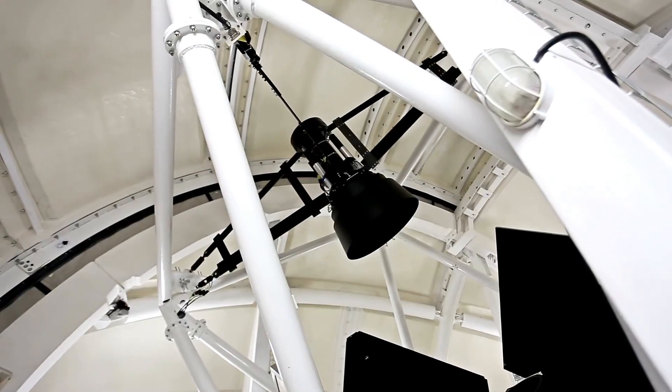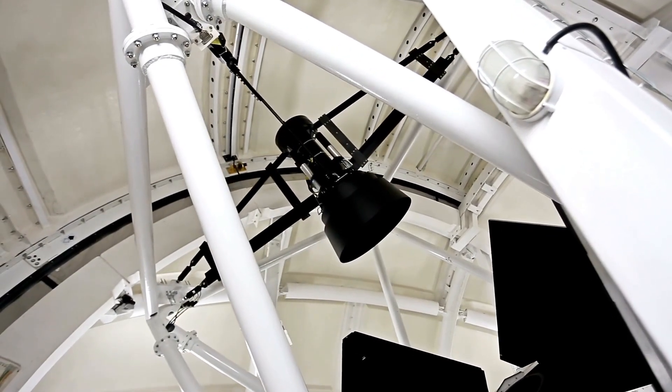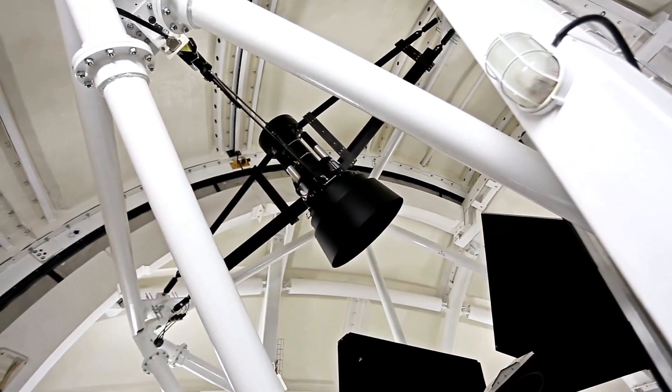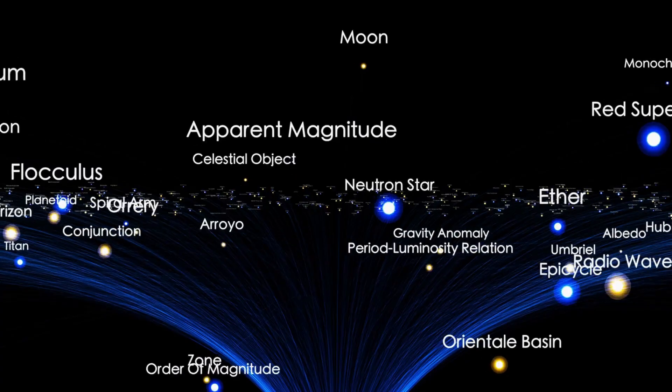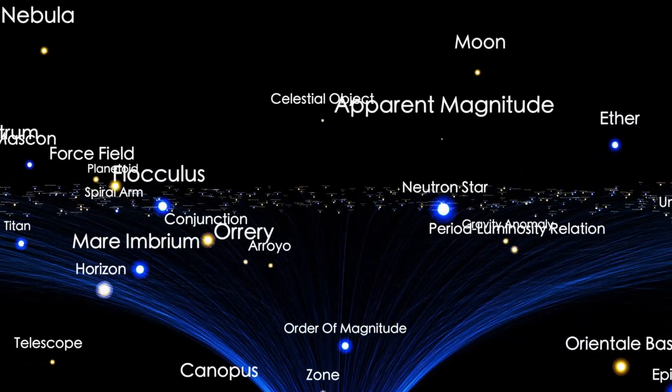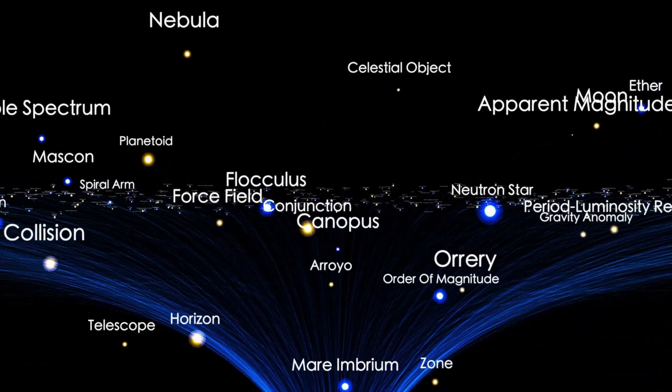Because of the time it takes light to travel from these distant objects to the position of the JWST telescope in orbit around the sun, we are observing these galaxies as they were approximately 650 million years after the Big Bang.